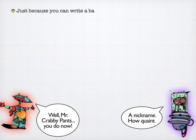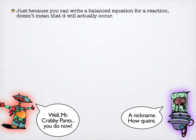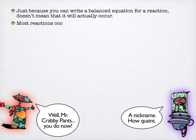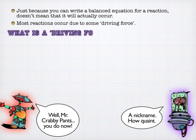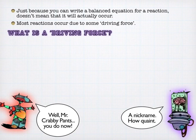Just because you can balance an equation — which is what we talked about last time — doesn't mean that it will actually take place in the real world. There's a quantitative way of figuring out whether reactions will take place, where you look at the numeric measurement of entropy, which is disorder in a system, and enthalpy, which is the heat gain or loss, and try to find favorable conditions for both.